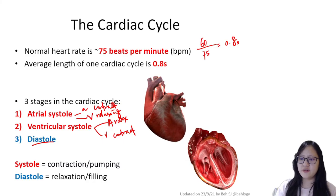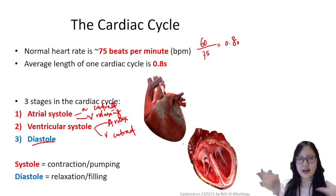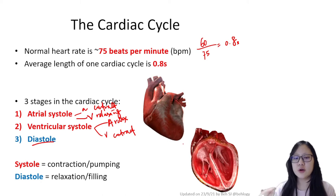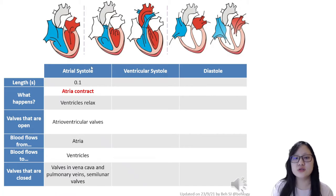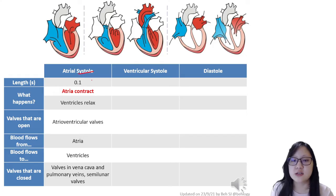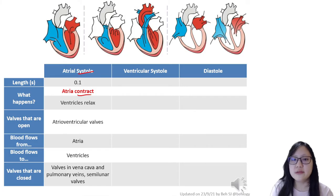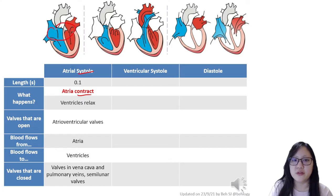In the animation, first the atria contracts, then the ventricles contract, and then the whole thing expands and relaxes. Looking at this in table form: during atrial systole, the atria is contracting and the ventricles are relaxing. The atrioventricular valves — the tricuspid and bicuspid — open, allowing blood to flow from the atria into the ventricles.